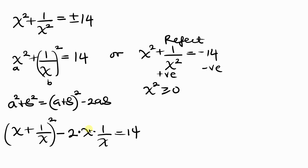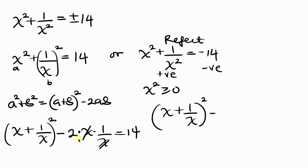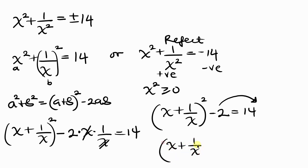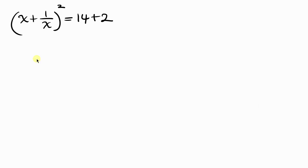Simplifying further, the x cancels with 1 over x, leaving x plus 1 over x, all raised to the power of 2, minus 2 equals 14. Moving negative 2 to the right, it becomes plus 2, so x plus 1 over x, all raised to the power of 2, equals 14 plus 2, which is 16.